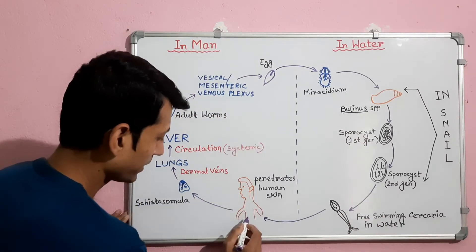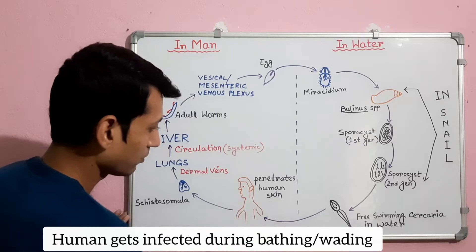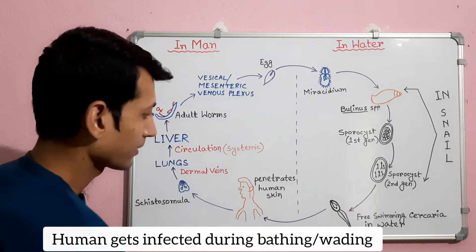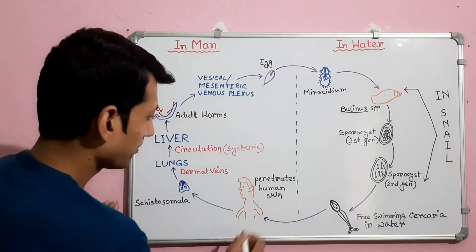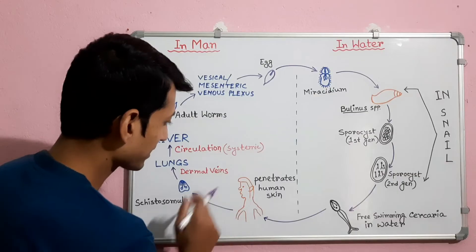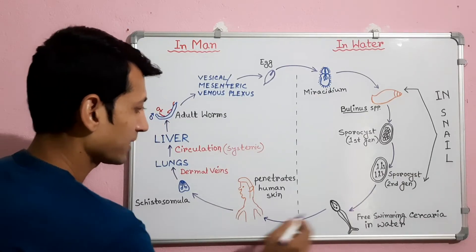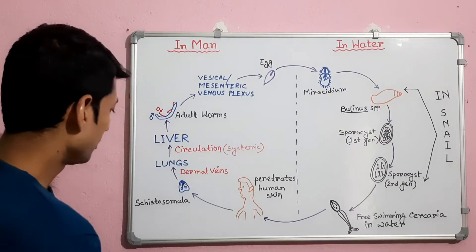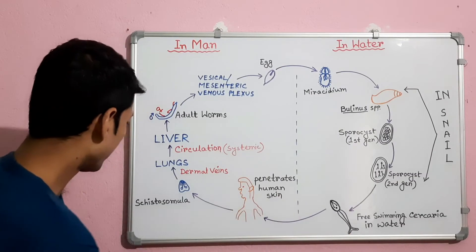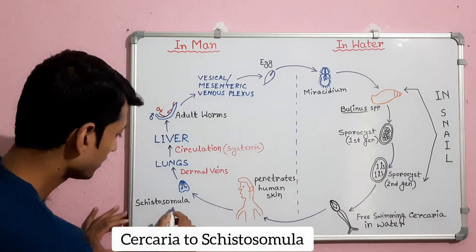When human beings are bathing or wetting themselves in this water body, they get infected. The cercaria penetrates the human skin and enters directly, losing its tail and outer body covering, and is transformed into schistosomula.